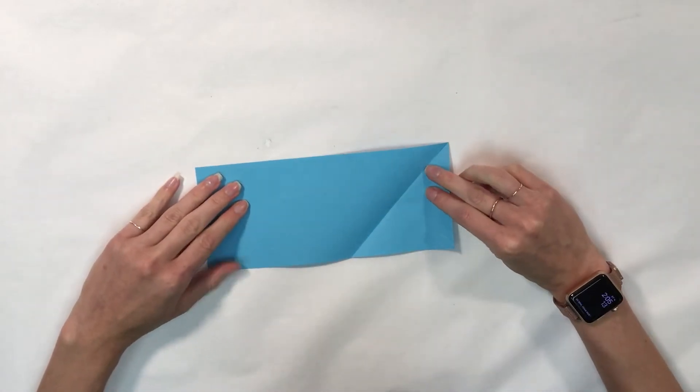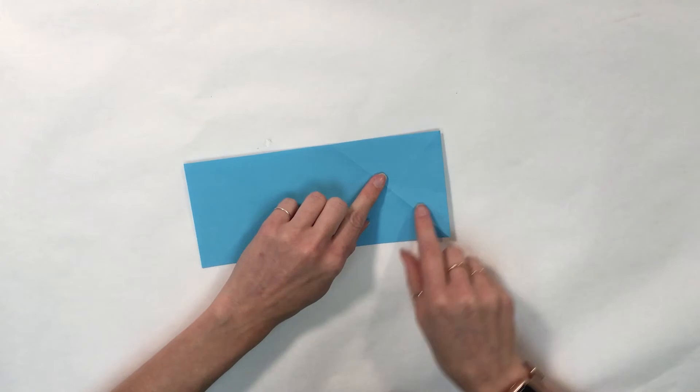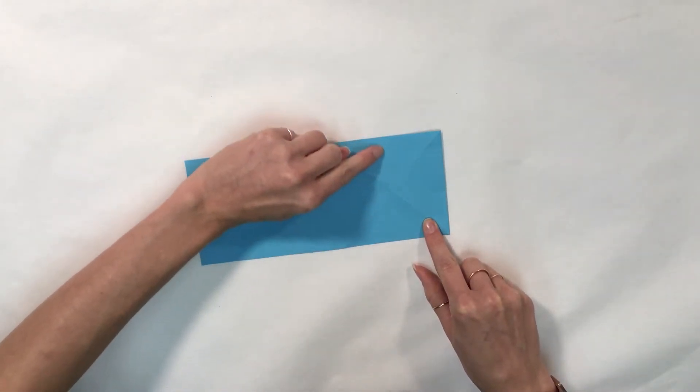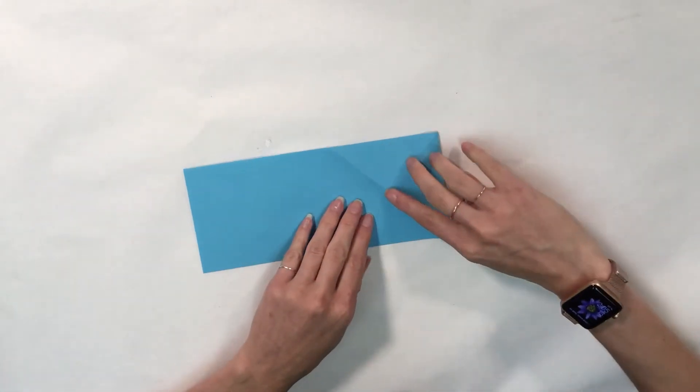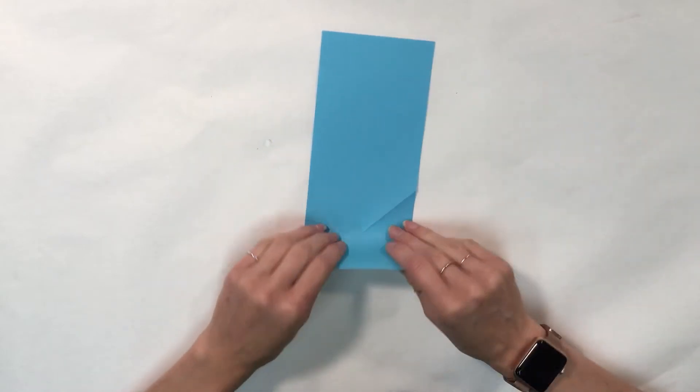I'm going to unfold, flip my paper over, and fold in half across where that middle X is.